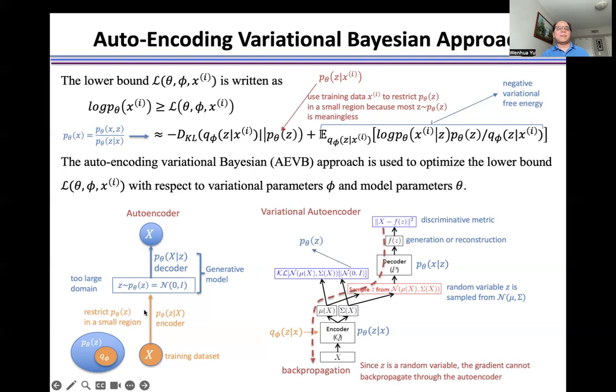To solve this problem, an encoder is used to restrict the distribution in a small range, so that the samples from the restricted distribution can be used to generate a meaningful result. The second term is negative variational free energy.